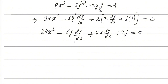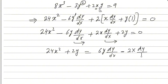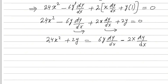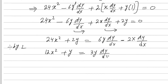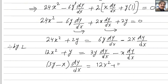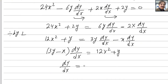We want to get dy/dx alone, so move the non-dy/dx terms to the right side: 24x² + 2y = 6y·(dy/dx) - 2x·(dy/dx). Dividing every term by 2: 12x² + y = 3y·(dy/dx) - x·(dy/dx). Factoring out dy/dx: 12x² + y = (3y - x)·(dy/dx), so dy/dx = (12x² + y) / (3y - x).